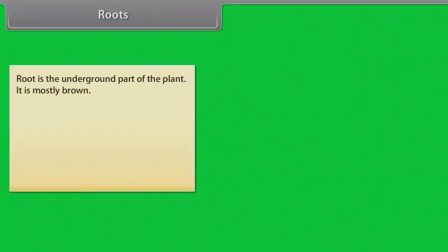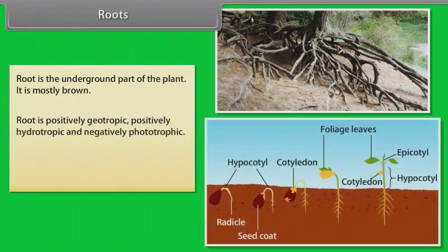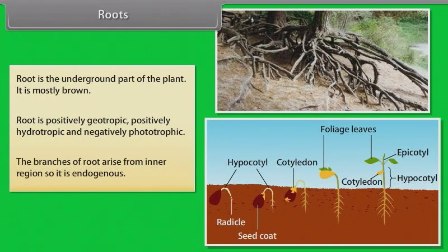Root is the underground part of the plant. It is mostly brown. Root is positively geotropic, positively hydrotropic and negatively phototropic. The branches of root arise from the inner region, so it is endogenous.